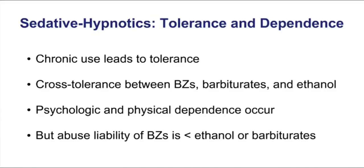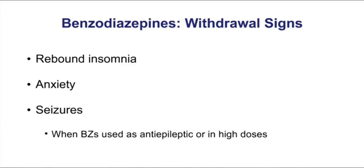You can develop tolerance and dependence to sedative hypnotics. Chronic use leads to tolerance, and there can be cross-tolerance between the GABA drugs — benzos, barbs, and ethanol. Both psychological and physical dependence can occur, but overall the abuse liability of benzos is less than ethanol or barbiturates. The withdrawal signs of a benzo include rebound insomnia and anxiety, and perhaps even seizures when benzos are used as anti-epileptic drugs or at high doses. Because benzos are GABA drugs and GABA is a depressing CNS neurotransmitter, withdrawal is going to look very stimulatory — insomnia and anxiety.